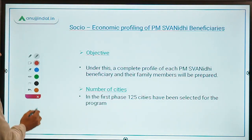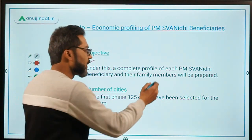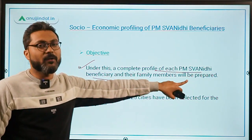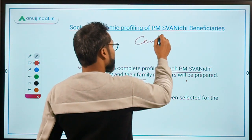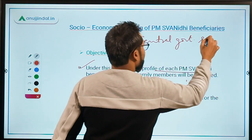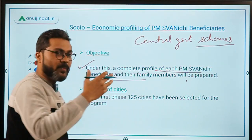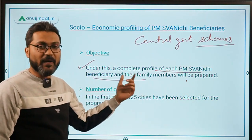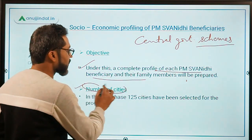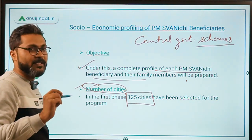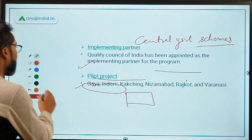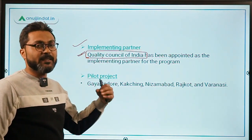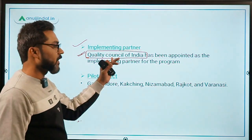The objective of this socio-economic profiling is that a complete profile of each PM Swanidhi beneficiary and their family will be prepared by the Government of India. Through this profiled data, all central government schemes where these beneficiaries are eligible to get benefits will be provided to them. This social profiling will be done in 125 cities, and the implementing partner is the Quality Council of India.